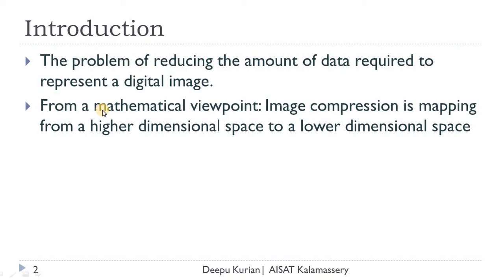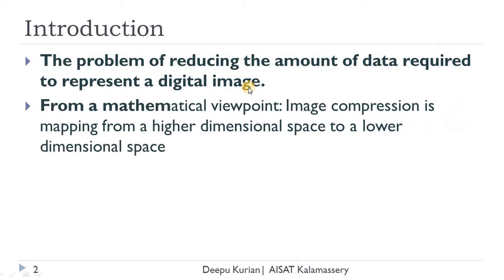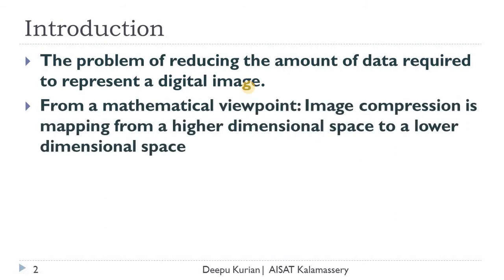Image compression is a process of reducing the amount of data required to represent an image. In a mathematical ground, we can define it as image compression is mapping from a higher dimensional space to a lower dimensional space. This means an actual image will be represented with a larger number of pixels. When this image is compressed, the number of pixels used to represent the compressed image will be much lesser, which results in a reduction of its dimensions. All image compression techniques are dimensionality reduction operations.